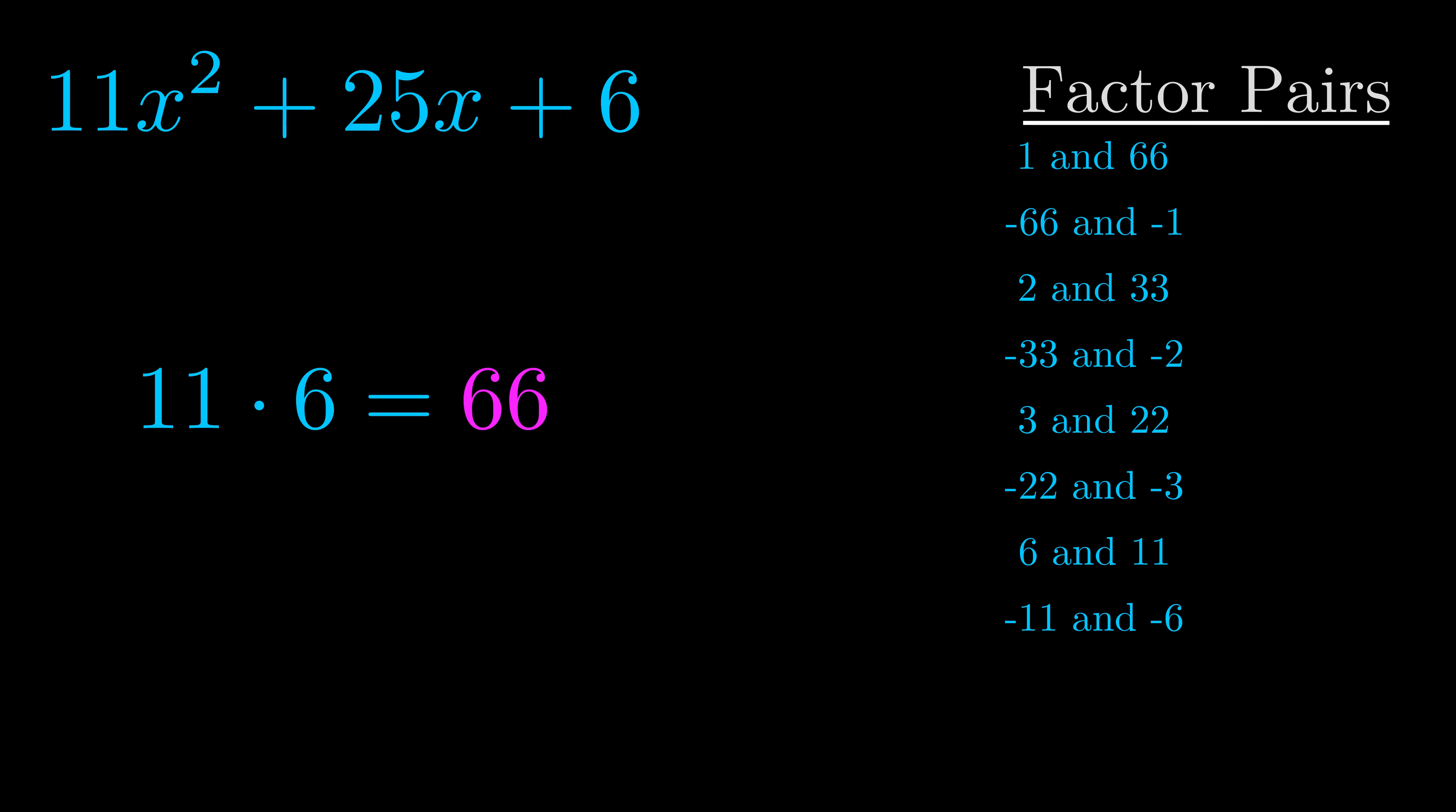The b value is the coefficient on the x term. That's the middle term, the one that we haven't done anything with yet. And really this is the only factor pair that we need.